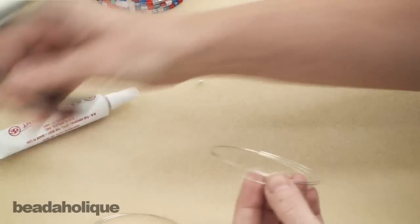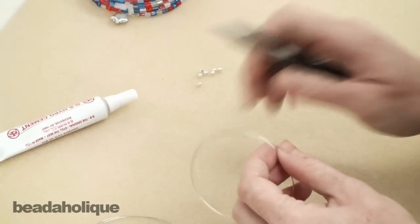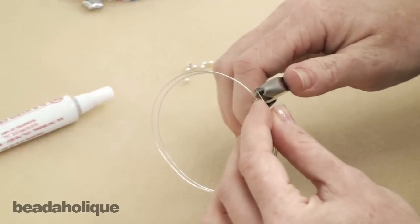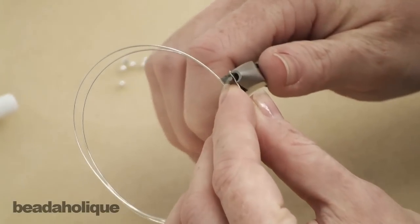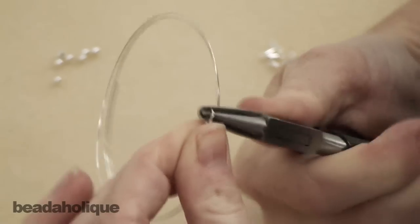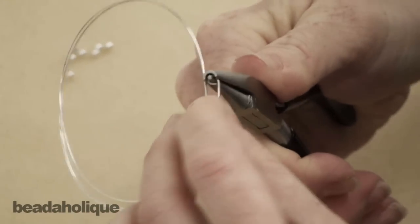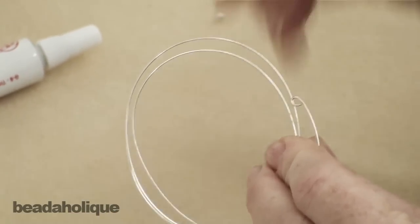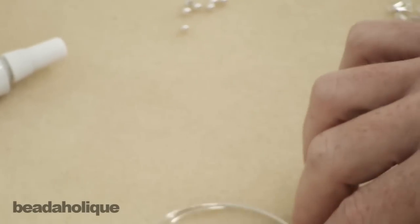So the first way and probably the easiest is to just make a little loop at the end of your memory wire. I've got some wire looping pliers here. I'm going to put the wire in it and twist around, and there we go, we have a loop. That will secure your beads from falling off and then you have something that you can add a little dangle to. That's one way.